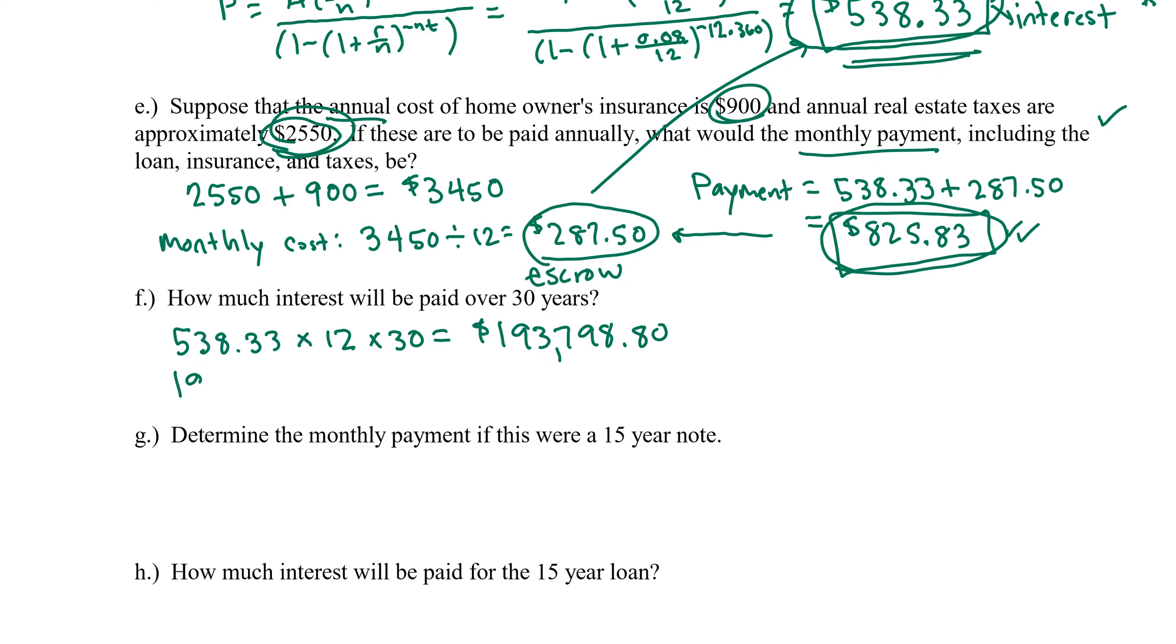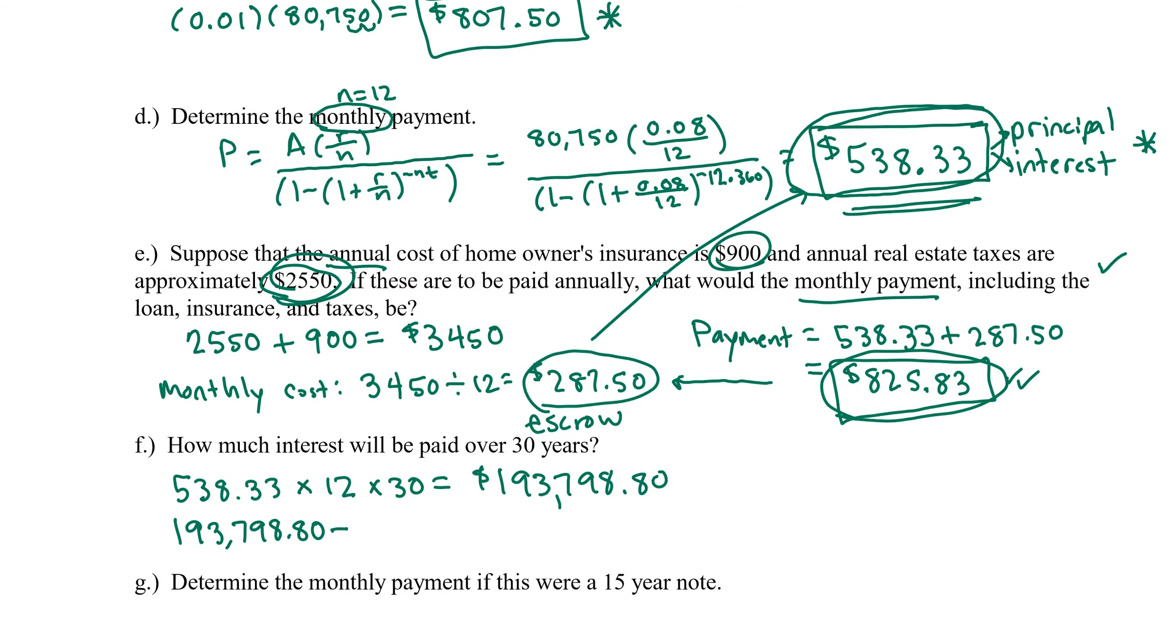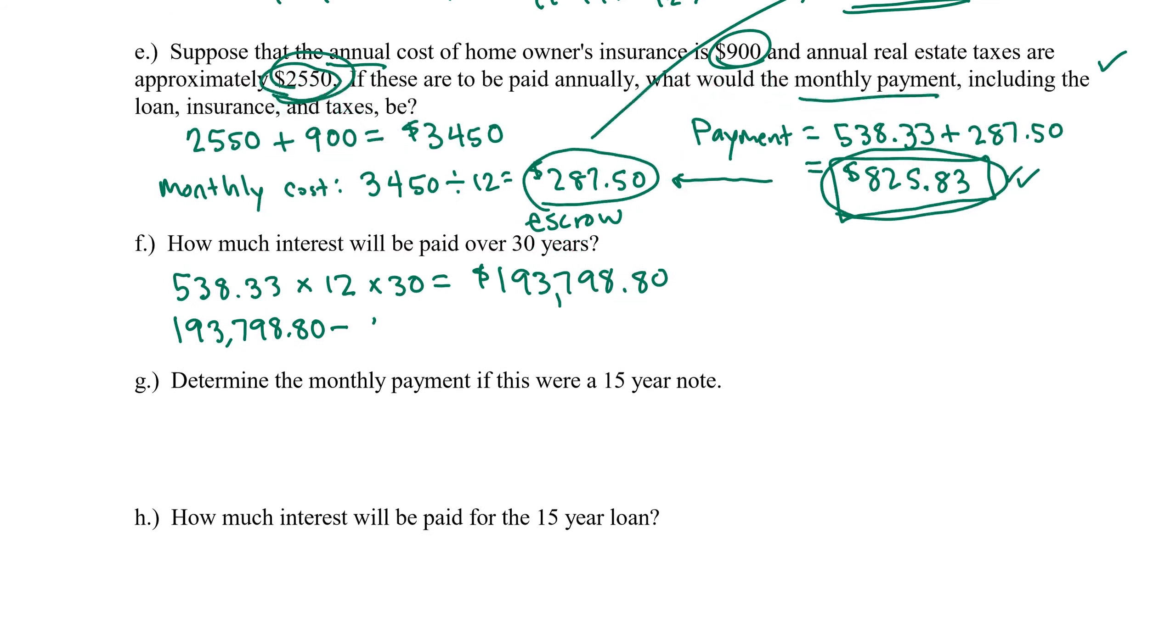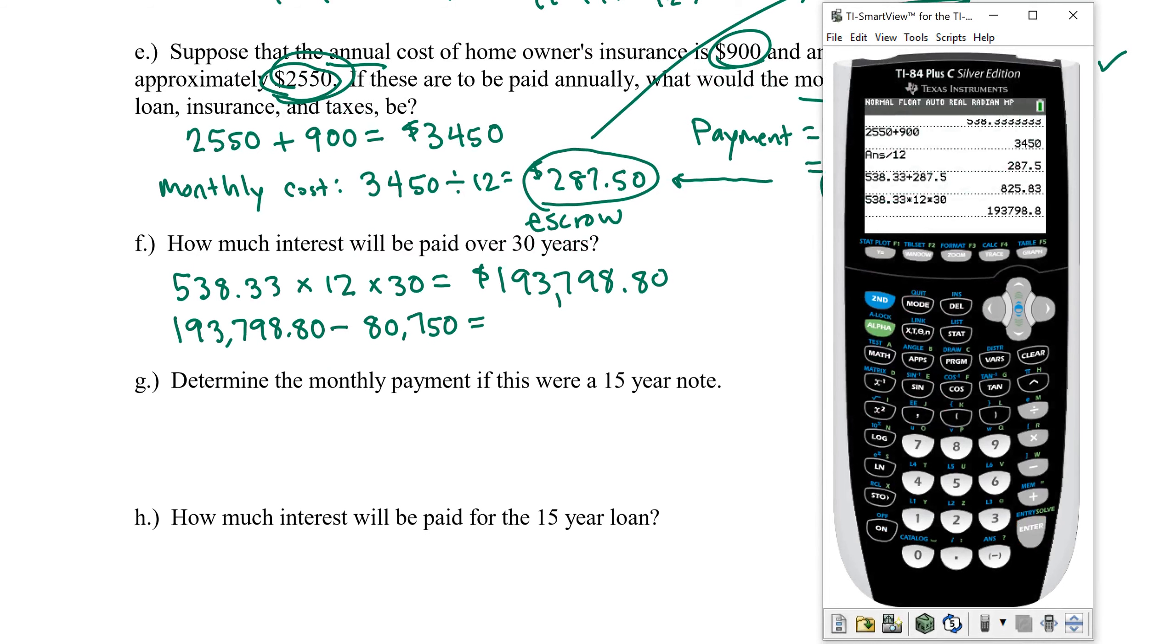Well, if out of our pocket came this big sum of money and the loan amount, not the price of the home, but the loan amount, remember that was this $80,750, the amount that we actually borrowed from the bank, that's the principal that we paid back. Let's subtract that from the total cost of the loan and we'll see how much of our monthly payments went to interest. $113,048.80.